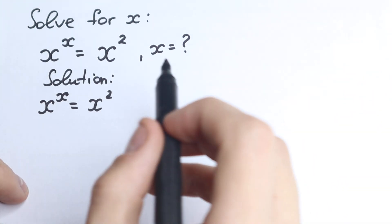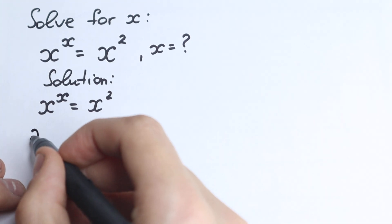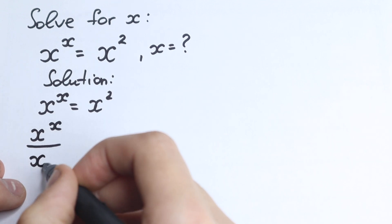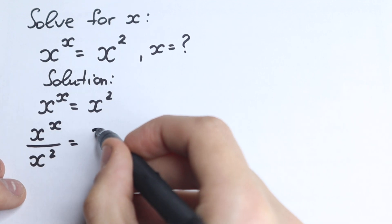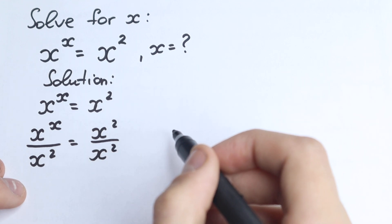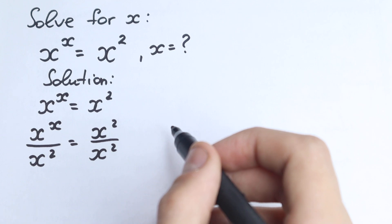I'd suggest you to divide both sides by x squared, so we have x to the power x, divide by x squared, this side, left-hand side, and equal to x squared, we divide right-hand side, so both sides we divide by x squared. This one and this one. Brilliant.